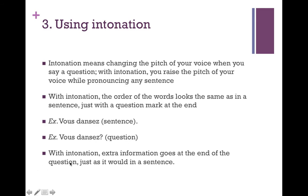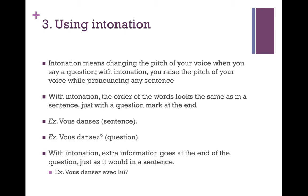If you have extra information — for example, those question phrases like quand or qui (when or who) — with intonation, you add it at the end of the sentence. So for example it would be 'vous dansez avec lui?' Whereas with inversion and est-ce que this extra information would go at the beginning, with intonation it goes at the end because we're keeping everything in the same order as it would be in a sentence. So it becomes 'vous dansez avec lui?' instead of 'avec lui, vous dansez?'